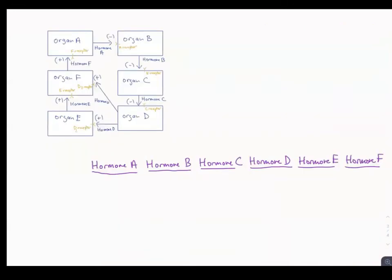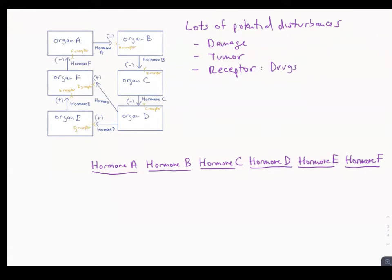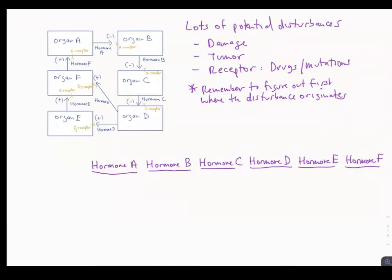When analyzing disturbances in a feedback loop — such as organ damage, a tumor making uncontrolled hormone amounts, or receptor disturbances from drugs or mutations — it's important to first identify where the disturbance is originating based on the scenario. The second thing to keep in mind is to check that your answer makes sense: if it's negative feedback, you should have a response that stabilizes the disturbance.